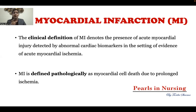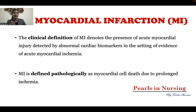Then we have another term known as myocardial injury. Myocardial injury can be detected with the help of increased cardiac biomarkers. The specific ones are troponin T and troponin I. When there is injury in the myocardium, these cardiac biomarkers will be elevated — troponin T (trop T) and troponin I (trop I) can be raised. That is myocardial injury.